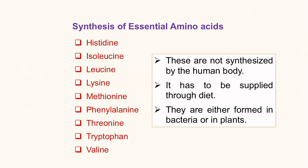Essential amino acids, as we all know, are not synthesized by the human body, but they are very much needed for the metabolic processes to take place within the system, and hence we need to supply them through diet. These are formed either in bacteria or in plants, and mammals cannot form or synthesize the essential amino acids on their own.